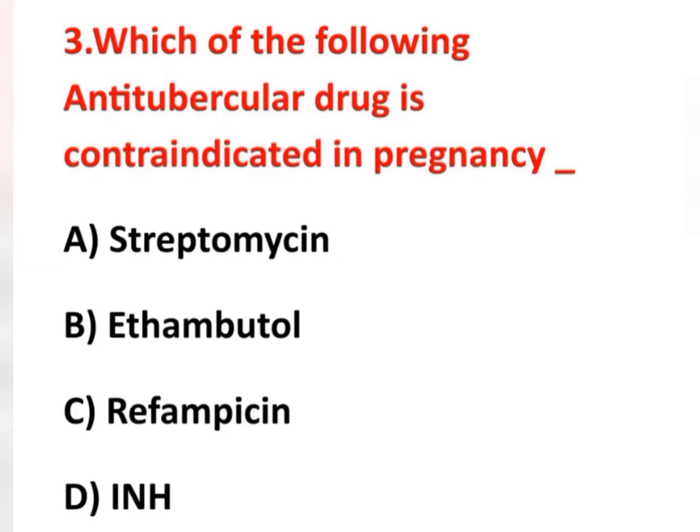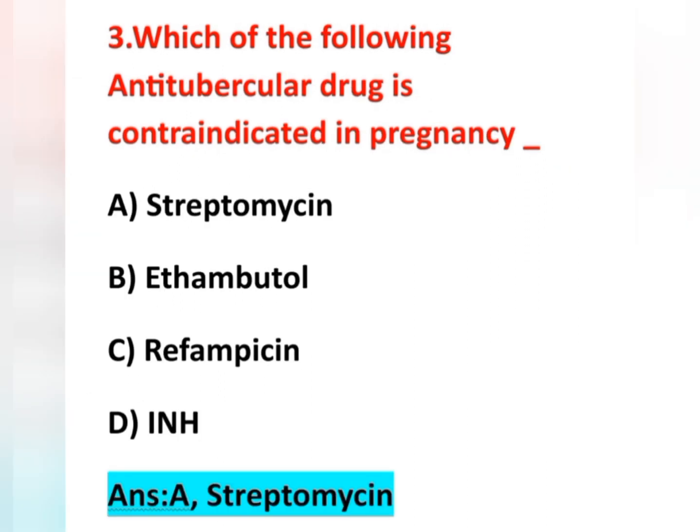The third question: Which of the following anti-tubercular drugs is contraindicated in pregnancy? Option A streptomycin, option B ethambutol, option C rifampicin, option D isoniazid. The answer is option A — streptomycin is the correct answer.